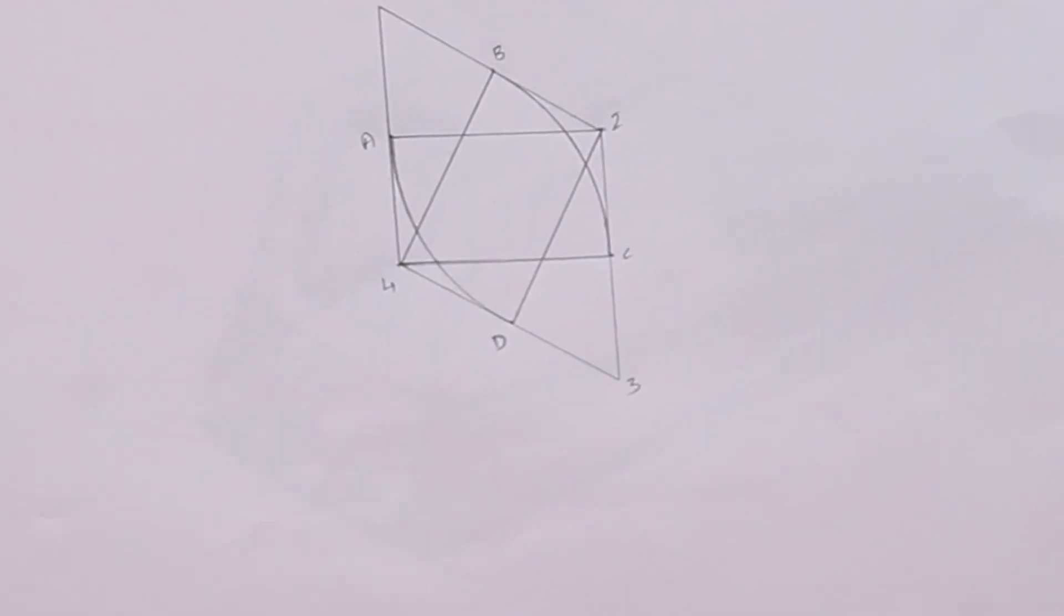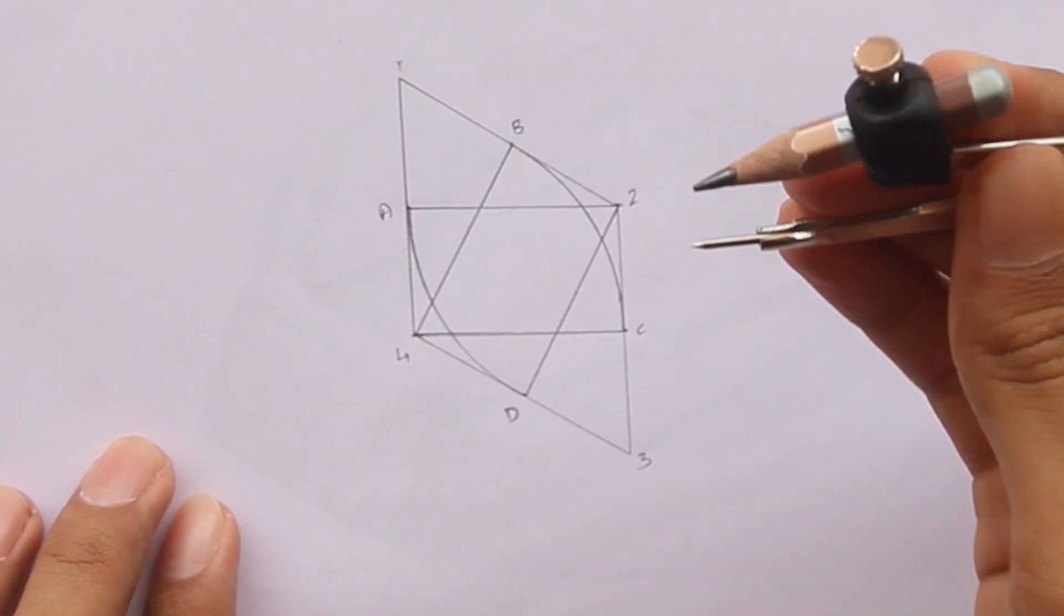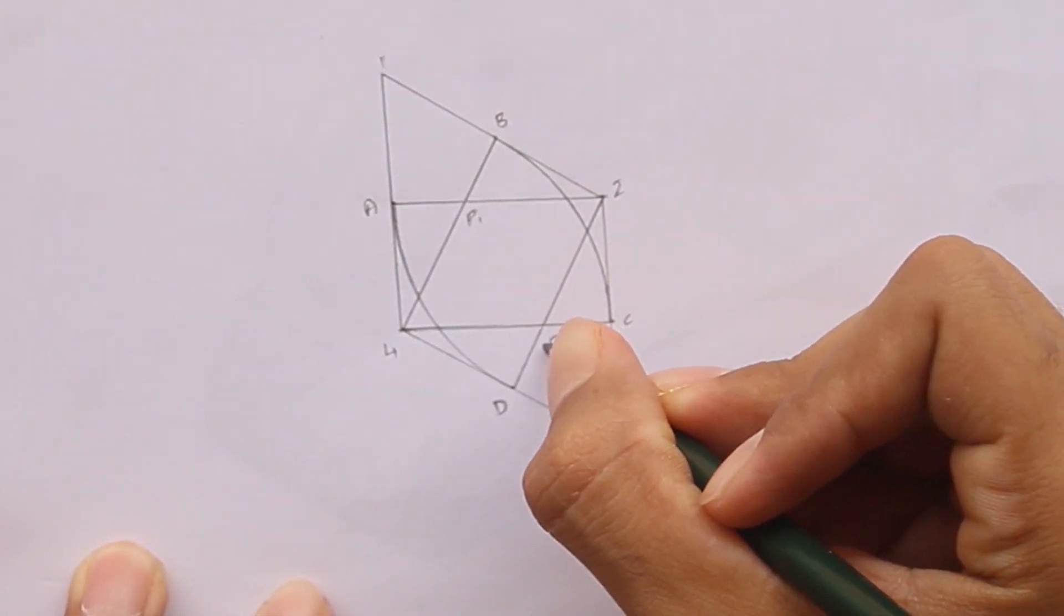Once you have done these steps, now you have got two points. So mark them as P1 and P2.